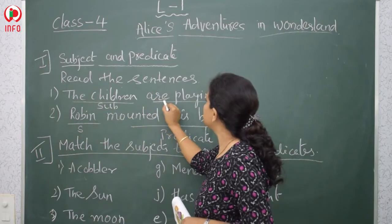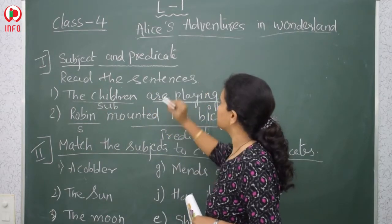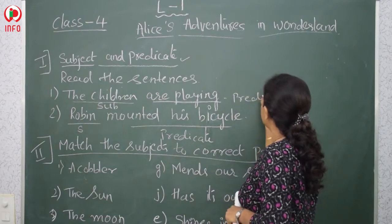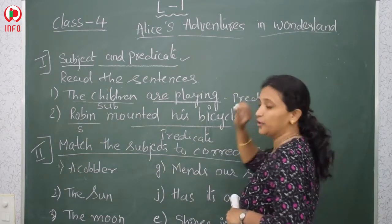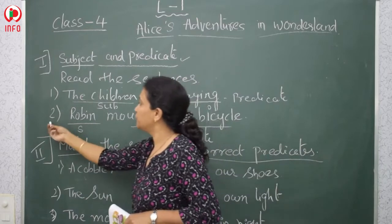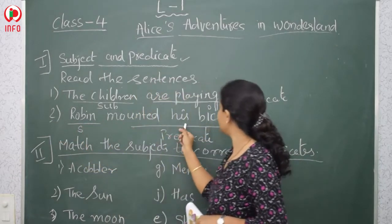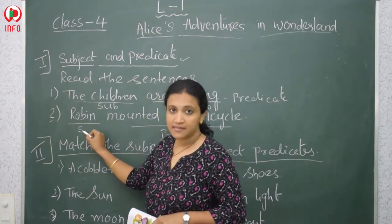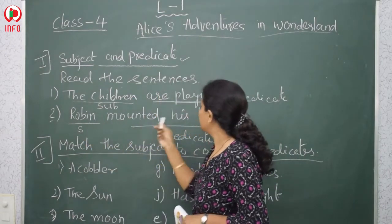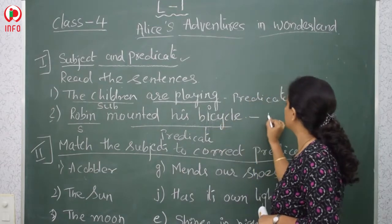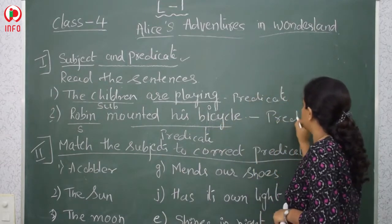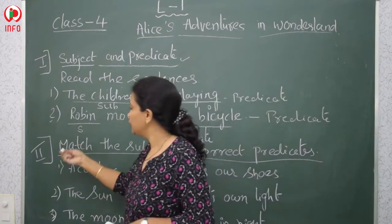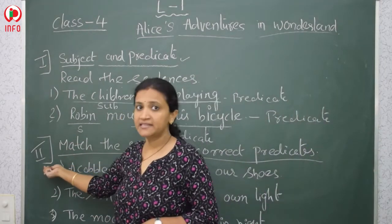The rest of the sentence is called the predicate. Done with this. And what is the second one? 'Robin mounted his bicycle.' So Robin is the subject here and 'mounted his bicycle' is the predicate. I hope you all understood, children. We will have a small activity on this.